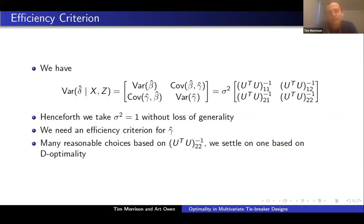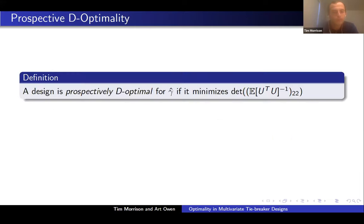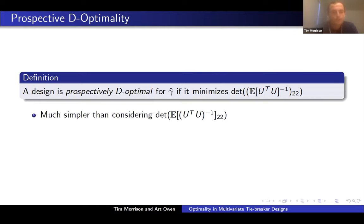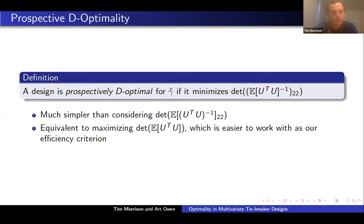We need an efficiency criterion for gamma hat based on the covariance matrix — the bottom right submatrix of U transpose U inverse. When looking at efficiency criteria based on a matrix, there are many reasonable choices. We settle on one based on D-optimality, a classical choice. We say a design is prospectively D-optimal for gamma hat if it minimizes the determinant of the expected value of U transpose U inverse — specifically the bottom right submatrix. We add an expectation because there's still randomness in x and z to marginalize over. It turns out this is equivalent to maximizing the determinant of the expected value of U transpose U, which is easier to work with.